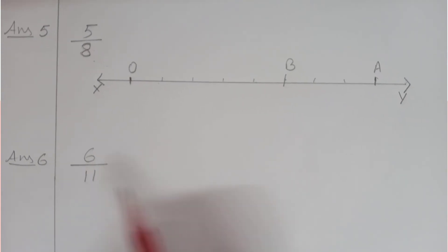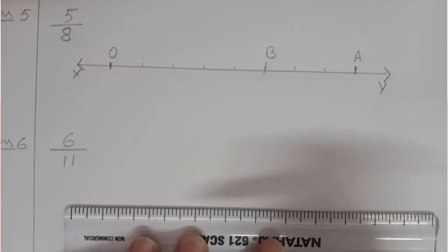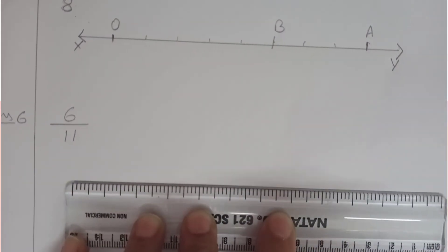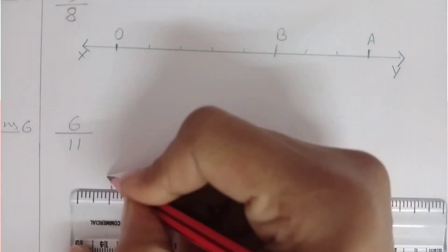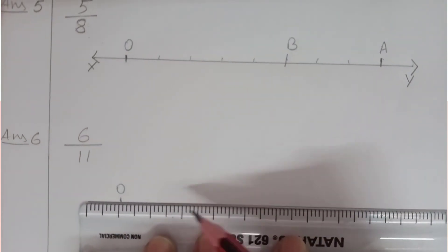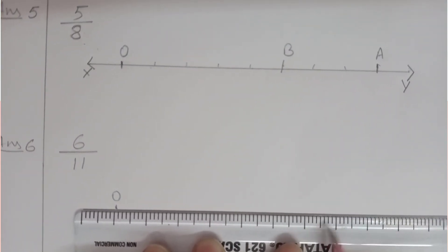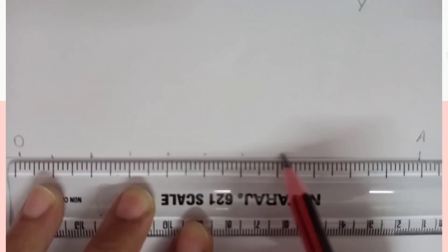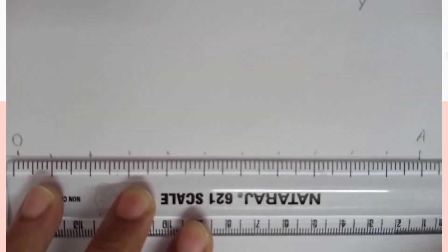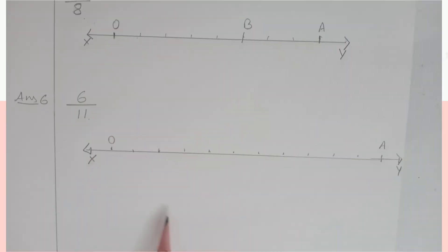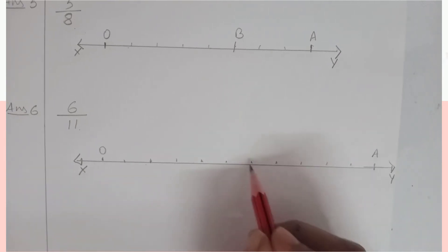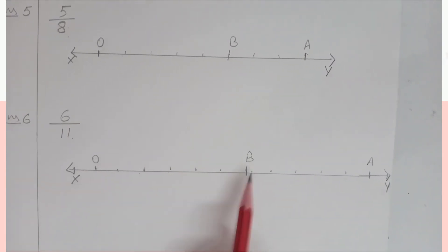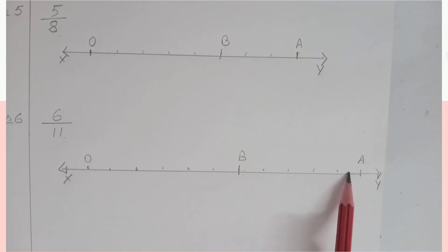We move on to question number 6. Again, we will draw a number line XY and on this number line, we will mark two points O and A which will be 11 units apart because the denominator is 11, so that we can divide OA into 11 equal parts. Now out of 11 equal parts, the numerator is 6, so we will consider the sixth part. At the end of the sixth part, this point will be marked as B. Therefore, OB will represent the fraction 6 by 11 on this number line XY.